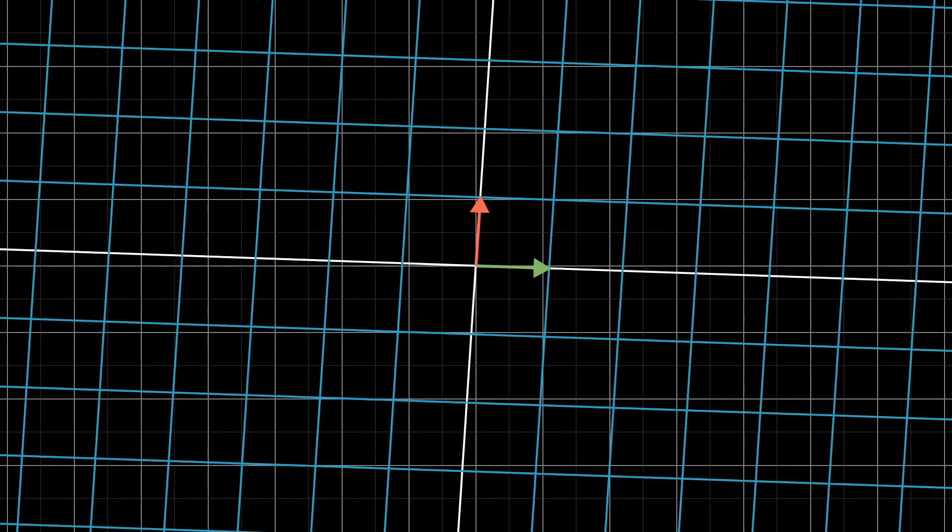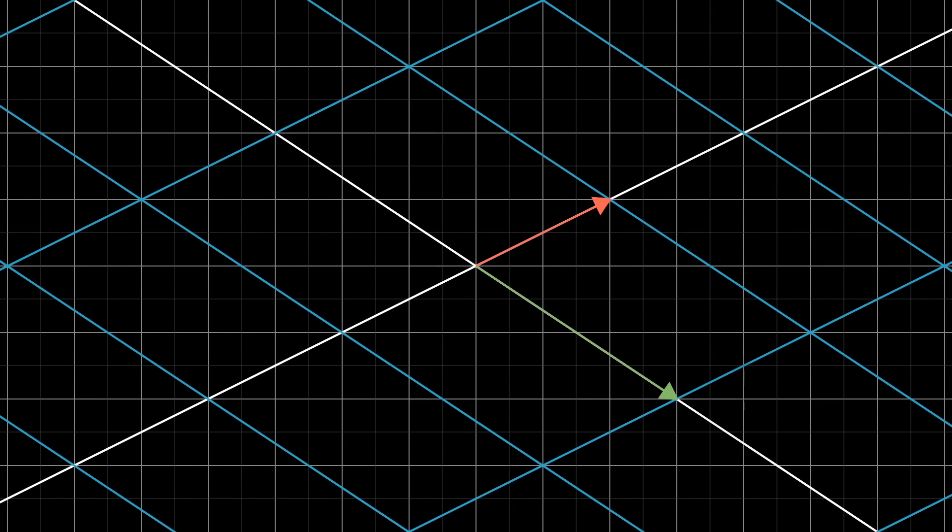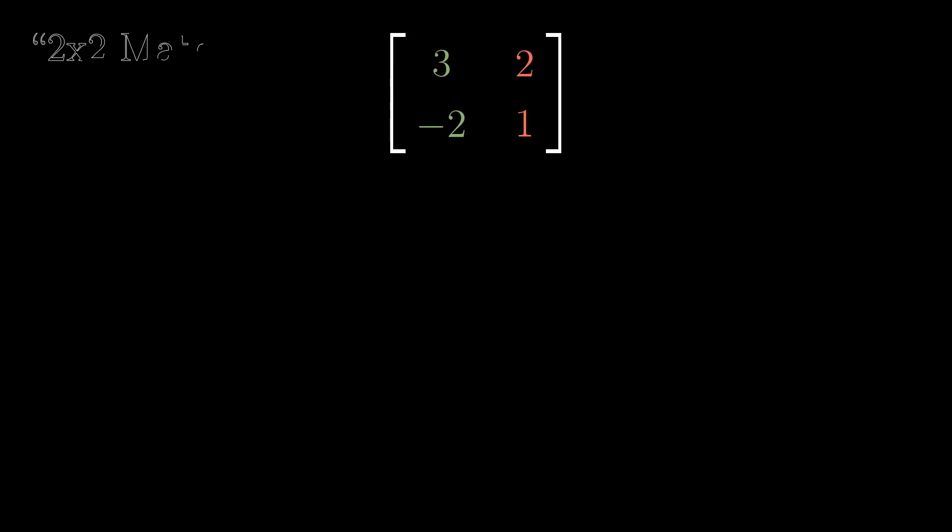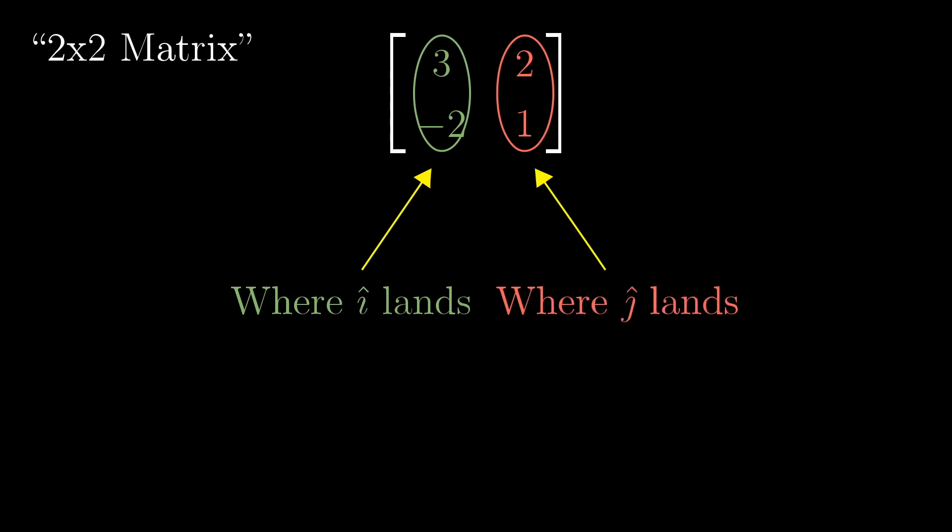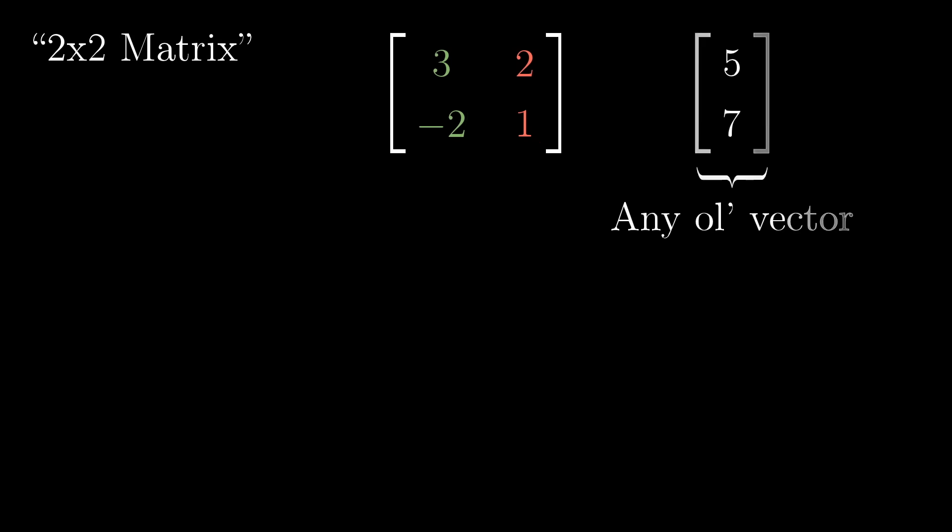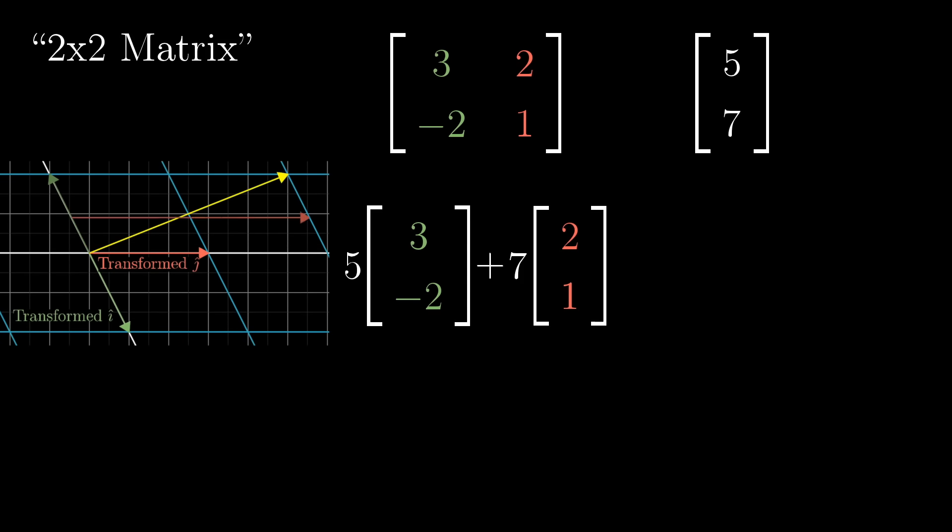What all of this is saying is that a two-dimensional linear transformation is completely described by just four numbers: the two coordinates for where i-hat lands and the two coordinates for where j-hat lands. Isn't that cool? It's common to package these coordinates into a 2x2 grid of numbers, called a 2x2 matrix, where you can interpret the columns as the two special vectors where i-hat and j-hat each land. If you're given a 2x2 matrix describing a linear transformation and some specific vector, and you want to know where that linear transformation takes that vector, you can take the coordinates of the vector, multiply them by the corresponding columns of the matrix, then add together what you get. This corresponds with the idea of adding the scaled versions of our new basis vectors.